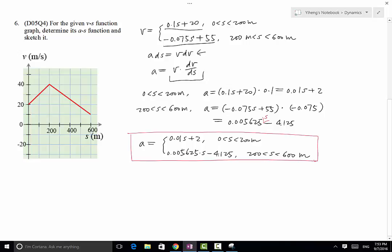Now we have found the piecewise function, the piecewise a as a function of s. And if you have a function, you can sketch it. So you can tell that both equations are linear equations. And the slope for both equations are positive.